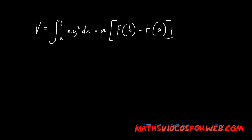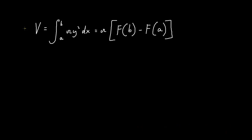In this video I'll be showing you how to find the formula for volumes of cones using this formula. This formula states that volume equals the integral from x=a to x=b of pi y² dx, which equals pi multiplied by the function of b minus the function of a. If you're wondering why we use this equation, please visit the link below this video where I explain how to find volumes using coordinate axes.